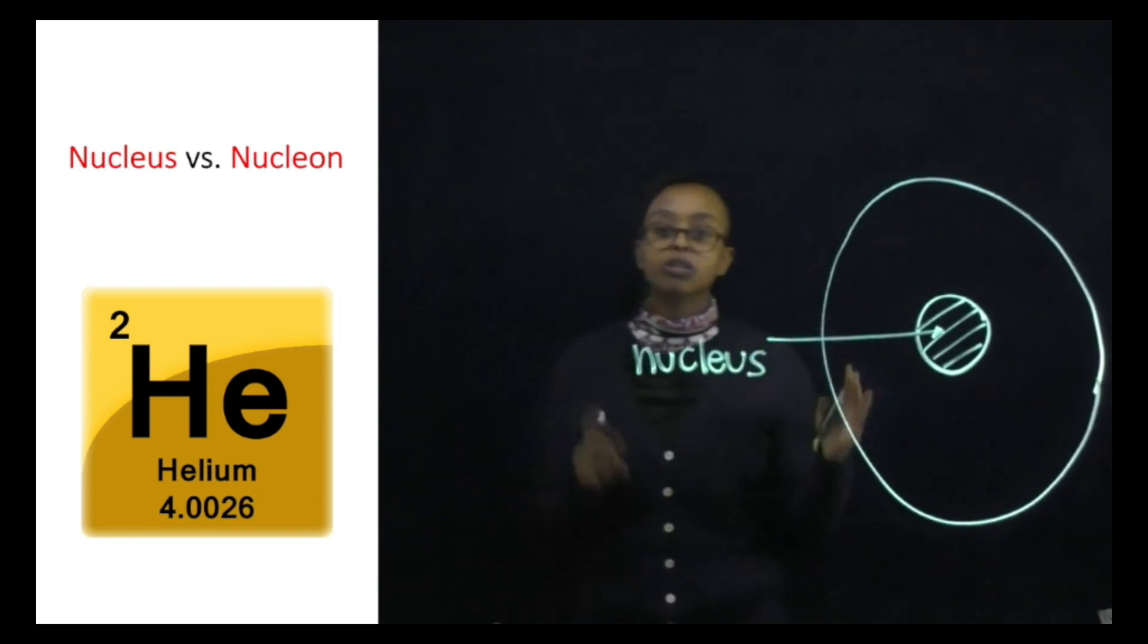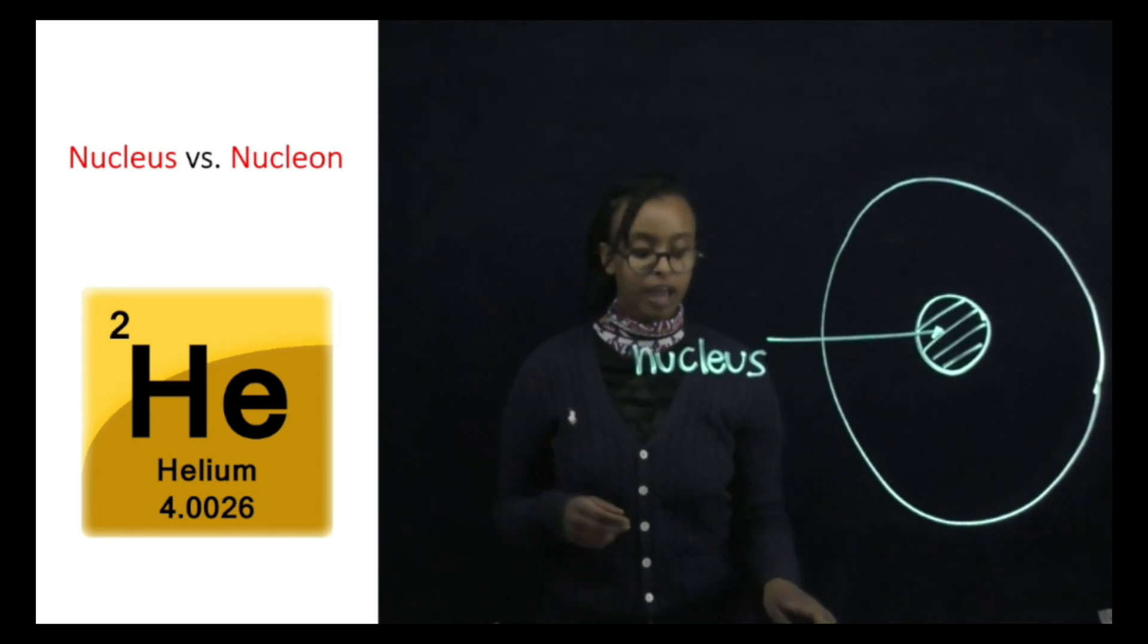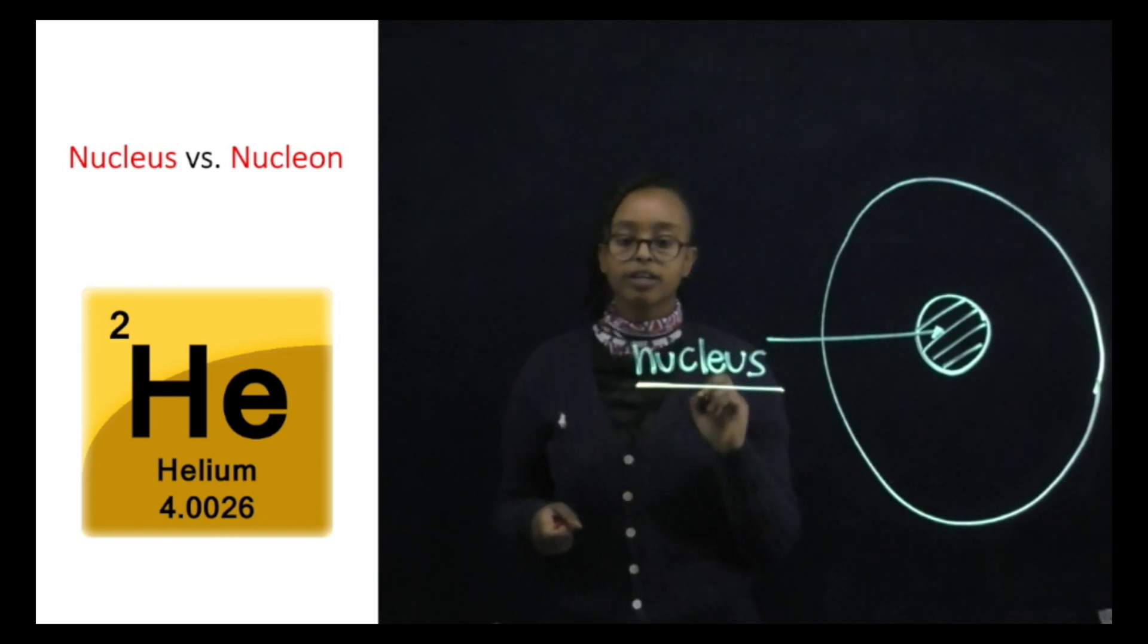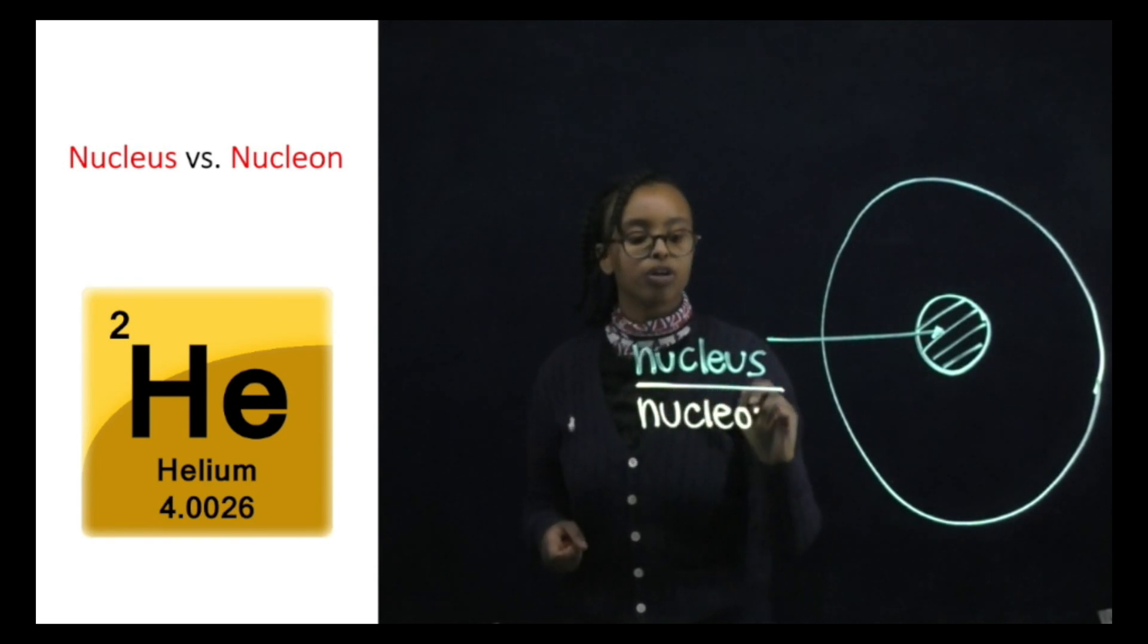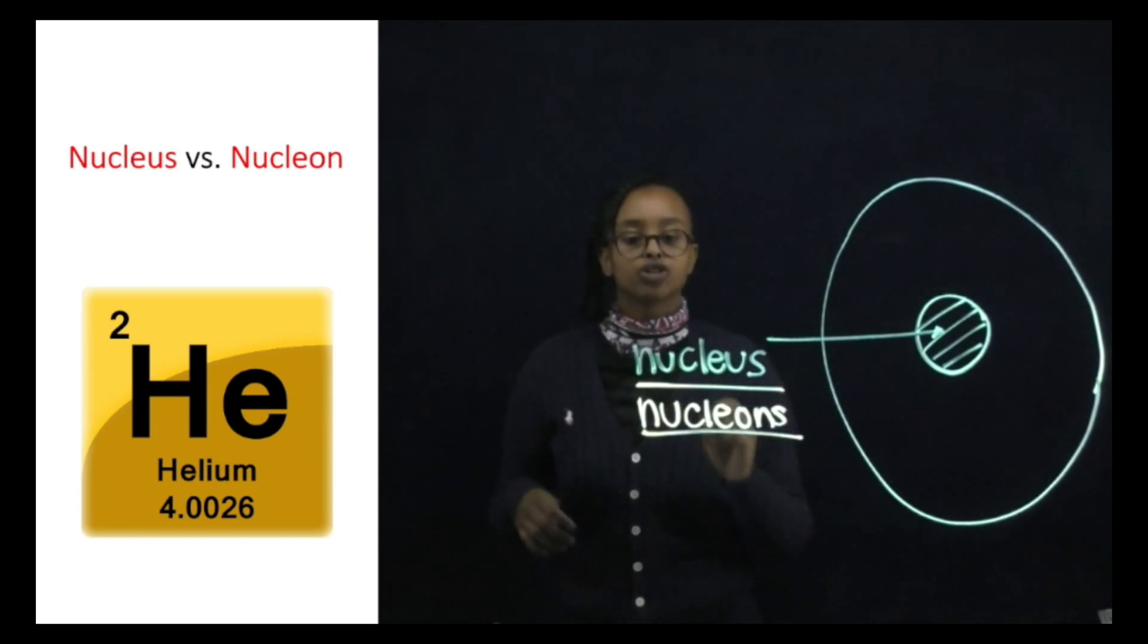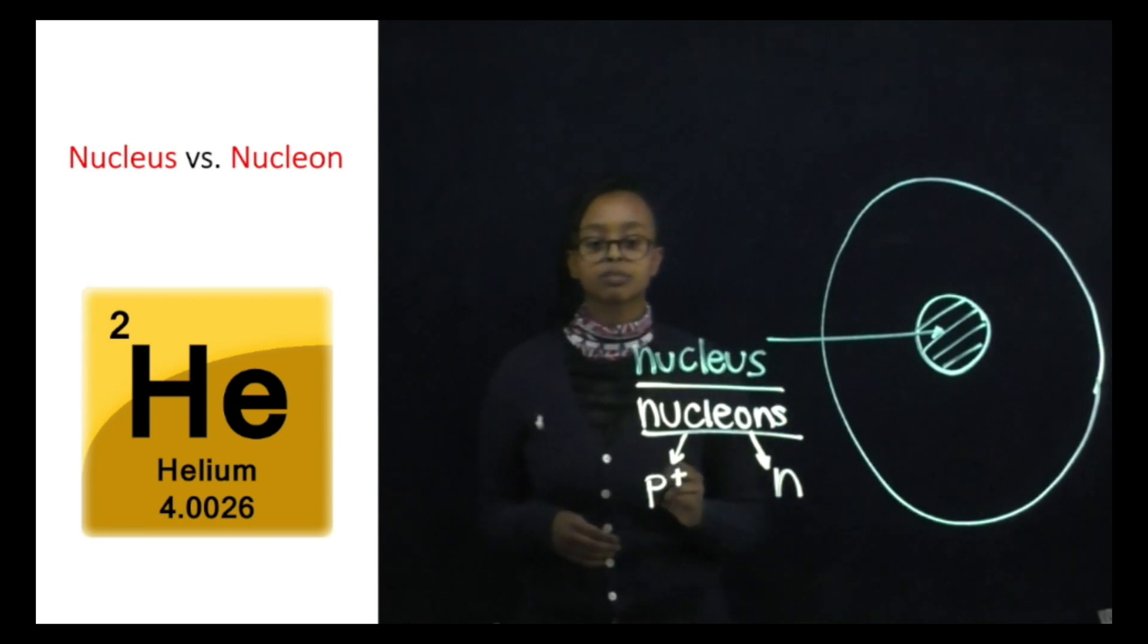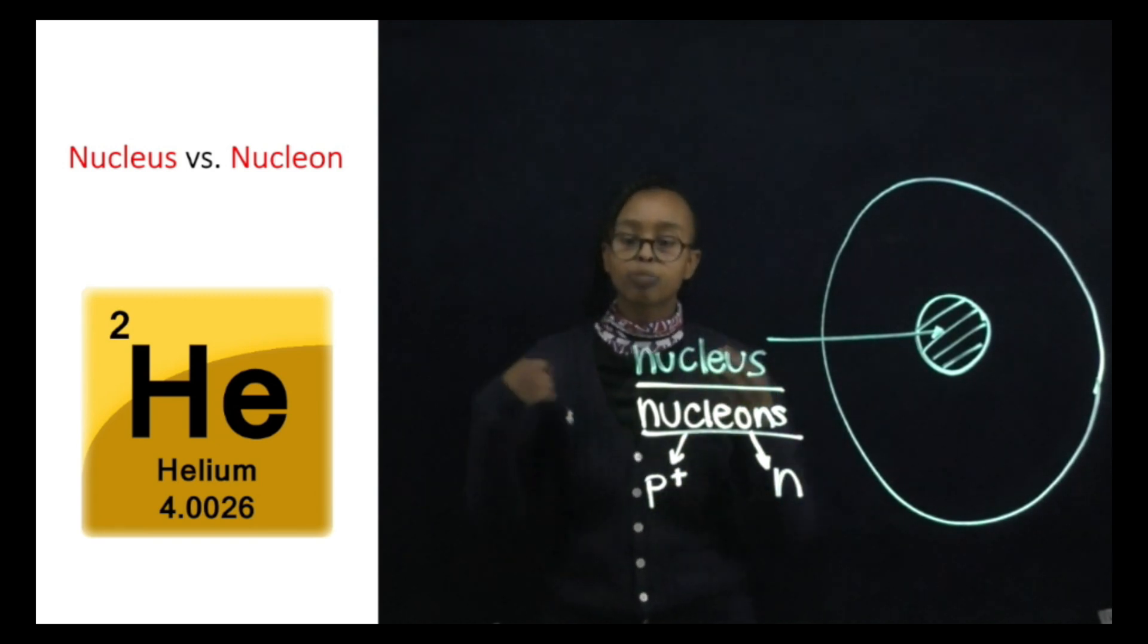So the nucleus of an atom is where we find the actual entire mass of the atom. And this nucleus is where we find what we call nucleons. In the nucleus we have nucleons and these nucleons just mean the word encompassing both protons and neutrons. Protons are particles with positive charge and neutrons are ones with no charge, neutral charge.